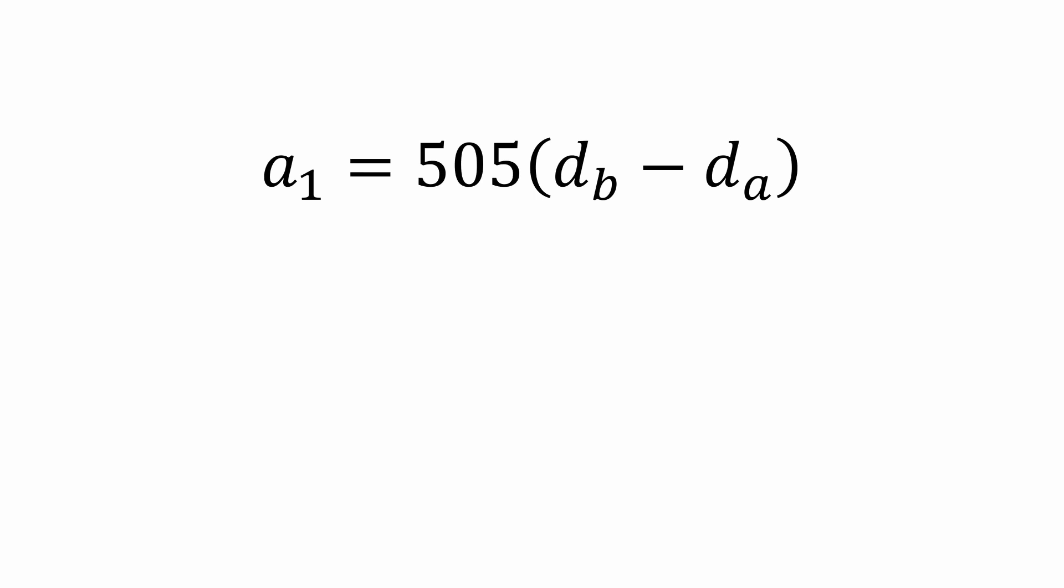We're looking for the minimum possible value for A1. And since both sequences only involve integers, A1 will be at its minimum when dB minus dA equals 1 or negative 1.